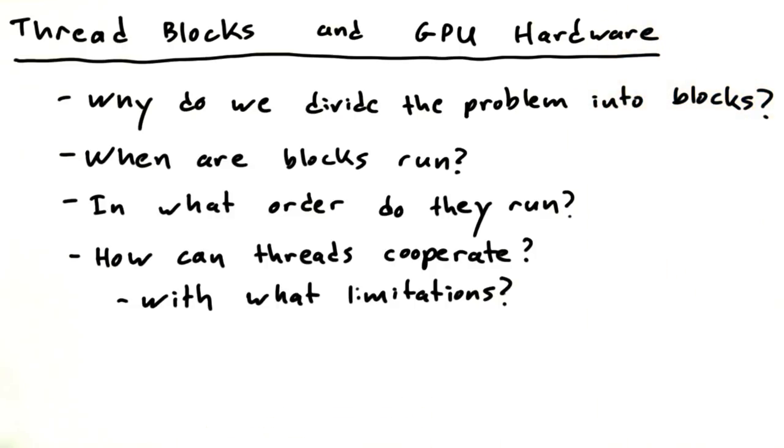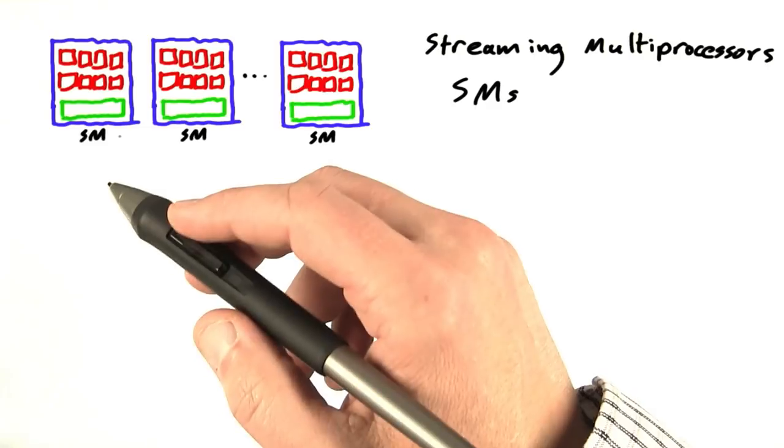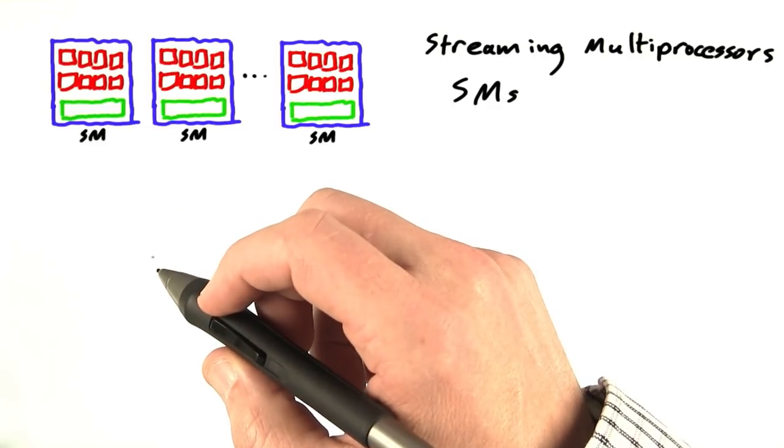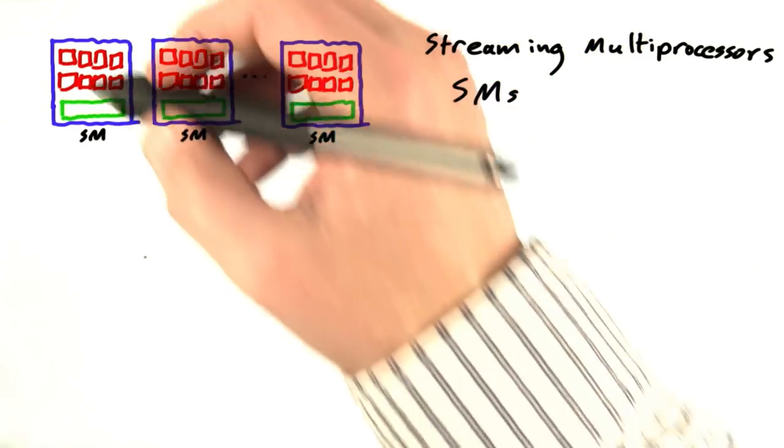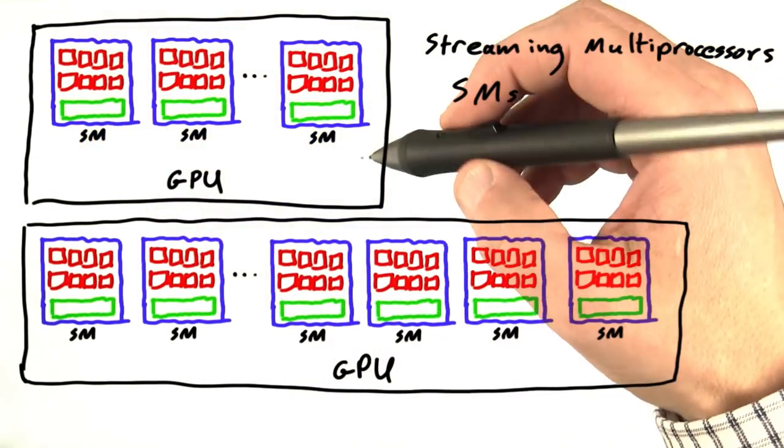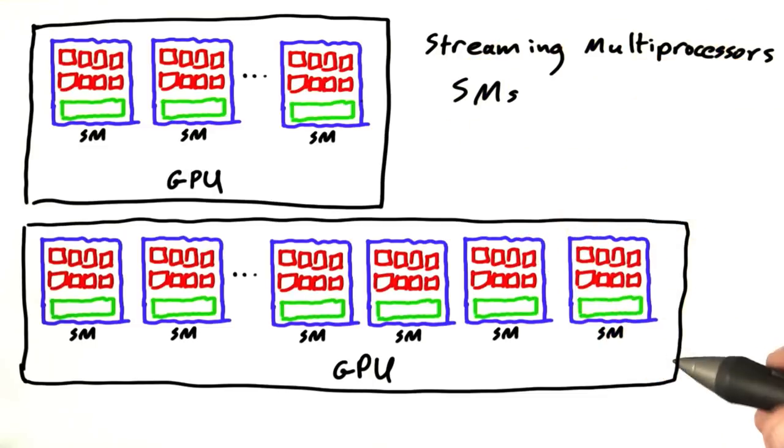To answer this, we're going to have to dive in to learn a little bit more about the GPU hardware. At a high level, a CUDA GPU is a bunch of these. We call them streaming multiprocessors, or SMs for short. Now, different GPUs have a different number of SMs. So a small GPU might only have one SM, whereas a really big GPU might have 16 SMs, for example.